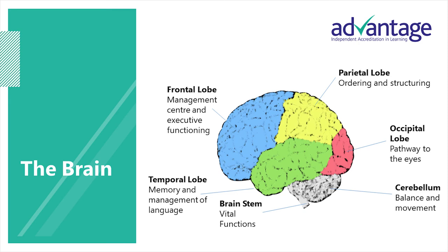Coloured in red is the occipital lobe — the pathway to the eyes, helping us to interpret how we see. Damage to this area can cause visual disturbances such as hallucinations, seeing dark mats or shadows as holes, and finding it difficult to see white food on white plates. In grey is the cerebellum, which assists with coordination, balance, muscle tone and control of voluntary movement. Damage to this area can cause tremors, lack of coordination, the inability to judge distance, and weak muscles.